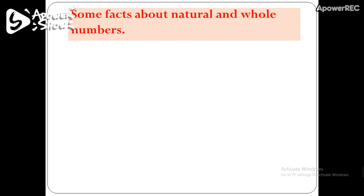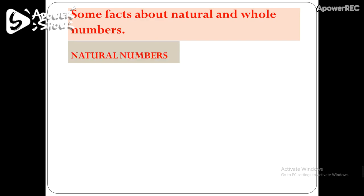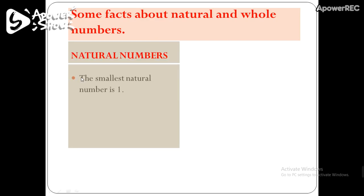So here we are learning some facts about natural and whole numbers. Natural numbers are the numbers which start from 1, and whole numbers are the numbers which start from 0. The smallest natural number is 1, since natural numbers start from 1.